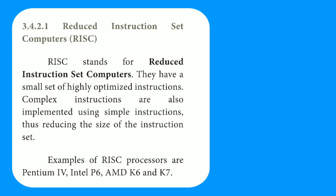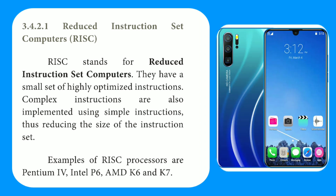RISC processors have a small set of highly optimized instructions. Complex instructions are implemented using simple instructions, thereby reducing the size of the instruction set. Complex instructions are reduced. The RISC microprocessor is used in our mobile devices — for example, Apple iPad and smart mobiles use RISC microprocessors.